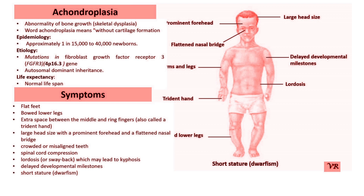Achondroplasia is a genetic disorder that is the most common cause of dwarfism, especially short-limbed dwarfism. The prevalence of achondroplasia in the general population is estimated to be 1 in 15,000 to 1 in 40,000 live births worldwide. Symptoms include short stature,